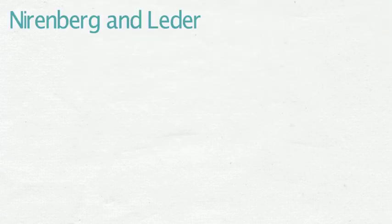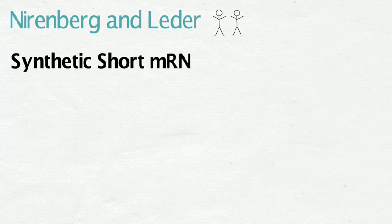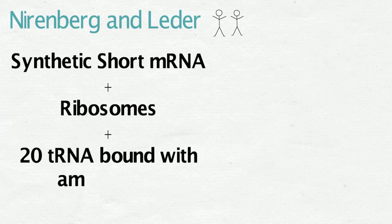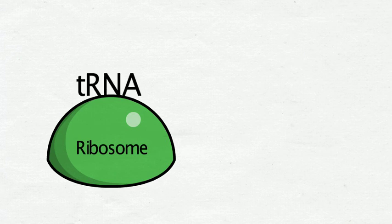Later on, in 1964, Nirenberg and Leder continued the work of Nirenberg and Matthaei's experiment and identified the remaining 61 codons. Nirenberg and Leder synthesized short mRNAs that had different codon combinations and then added them to a mixture of ribosomes and tRNAs attached to amino acids. Nirenberg and Leder allowed the tRNAs to bind to the ribosome and codon.